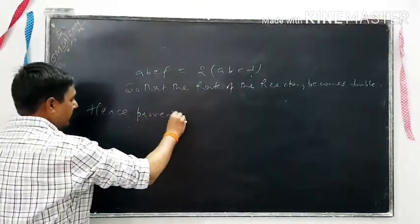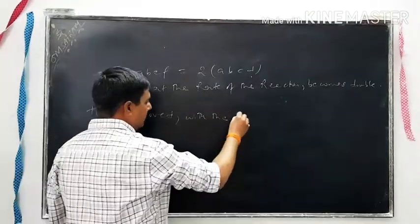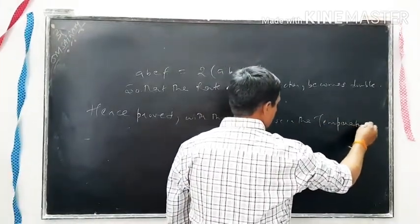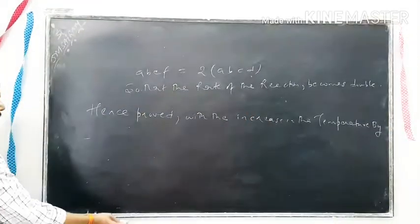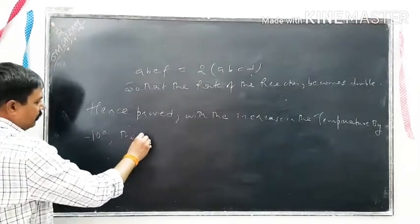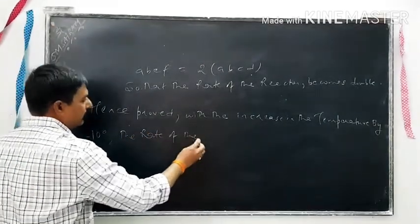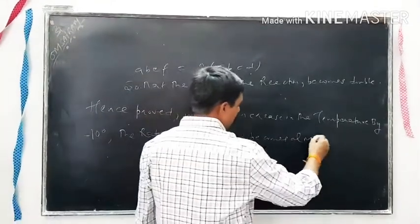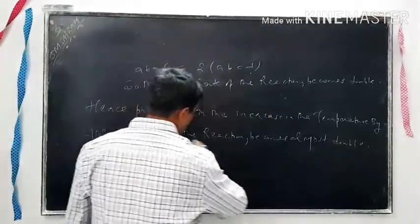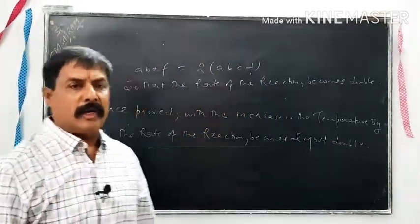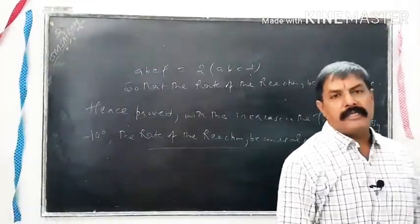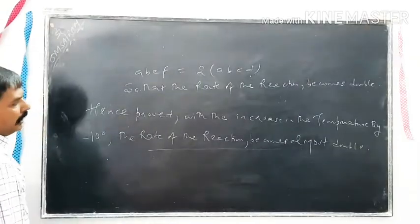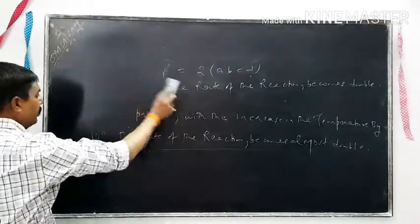Hence proved: with the increase in temperature by 10 degree, the rate of the reaction becomes almost double। यह था आज का पहला article जिसमें आपने पढ़ा कि किस तरीके से तापमान के बढ़ाने पर rate of reaction दूनी हो जाती है। यह direct question paper के अंदर आता है। अब अगला topic discuss करेंगे।